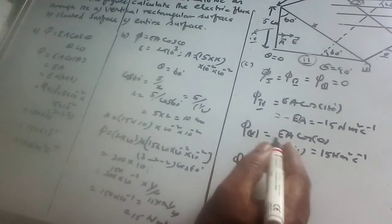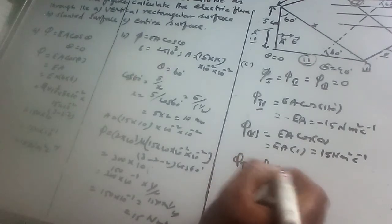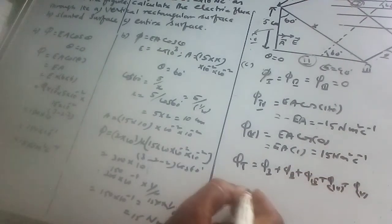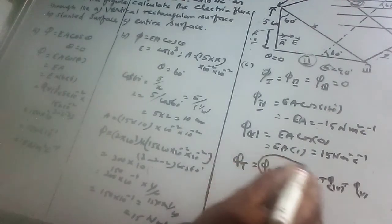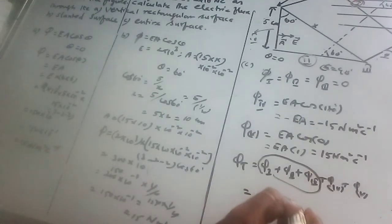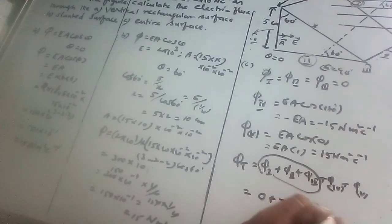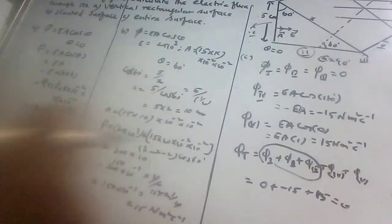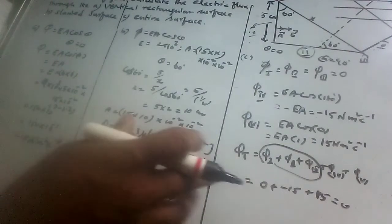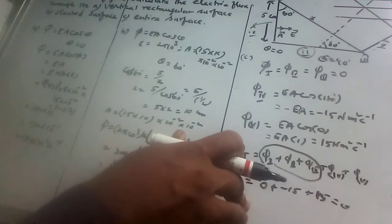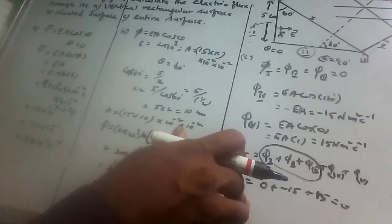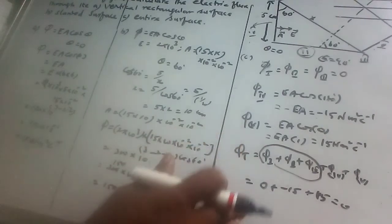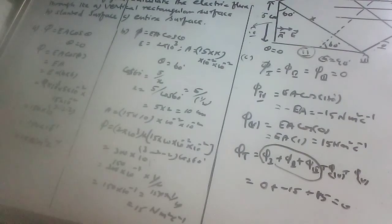So phi total equals phi 1 plus phi 2 plus phi 3 plus phi 4 plus phi 5. This equals 0 plus 0 plus 0 minus 15 plus 15, which equals 0. The total flux through the closed surface is zero. Flux is a scalar quantity, so it does not depend on direction.